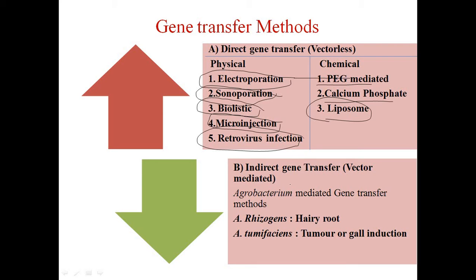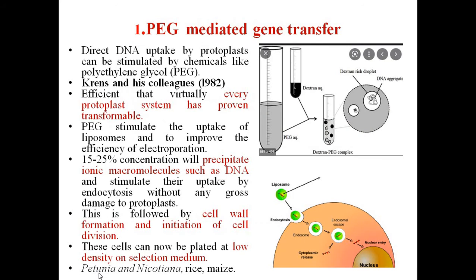In indirect gene transfer or vector-mediated gene transfer, Agrobacterium is used. It contains Ti as well as Ri plasmid. Agrobacterium tumefaciens is efficient with a specific Ti plasmid having T-DNA, and Agrobacterium rhizogenes uses an Ri plasmid. Now we go in detail for chemical-mediated gene transfer. First is polyethylene glycol.